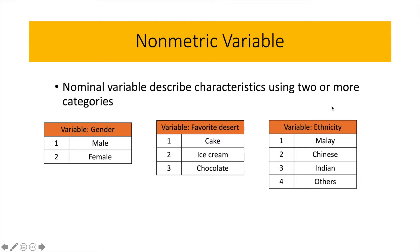A very common non-metric variable used in surveys is ethnicity, where number one represents Malay, number two represents Chinese, number three represents Indian, and number four for others. These are the non-metric variables that we would transform into dummy variables.